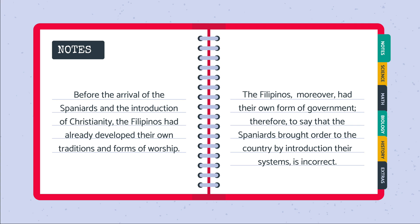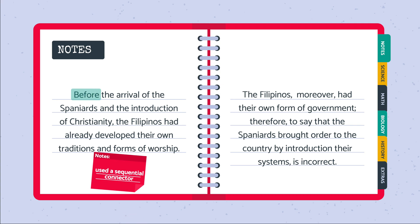The first sentence makes use of a sequential connector. As the name implies, sequential connectors indicate the order. They help to clarify the sequence of events over time.